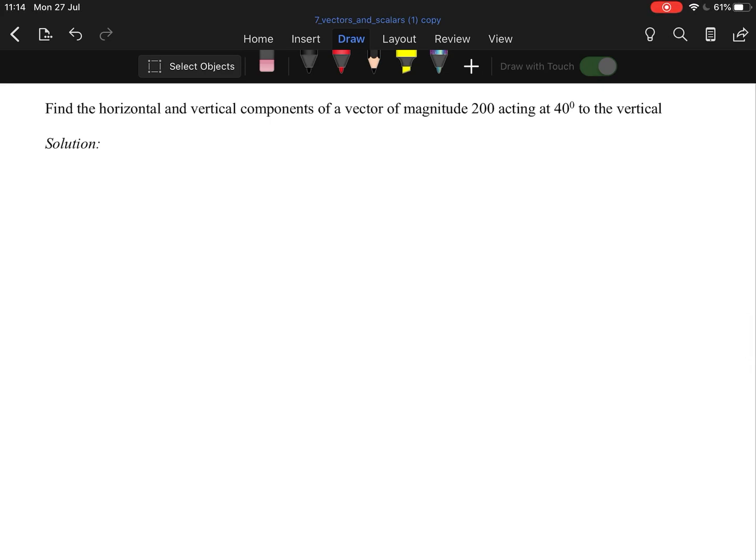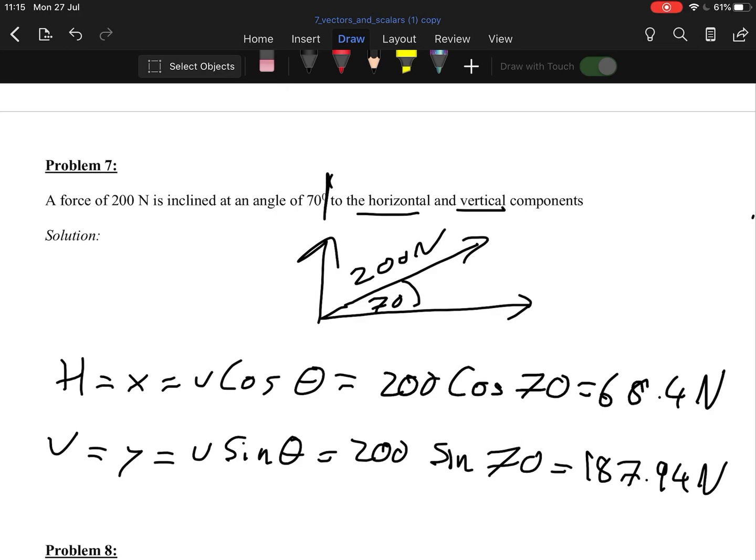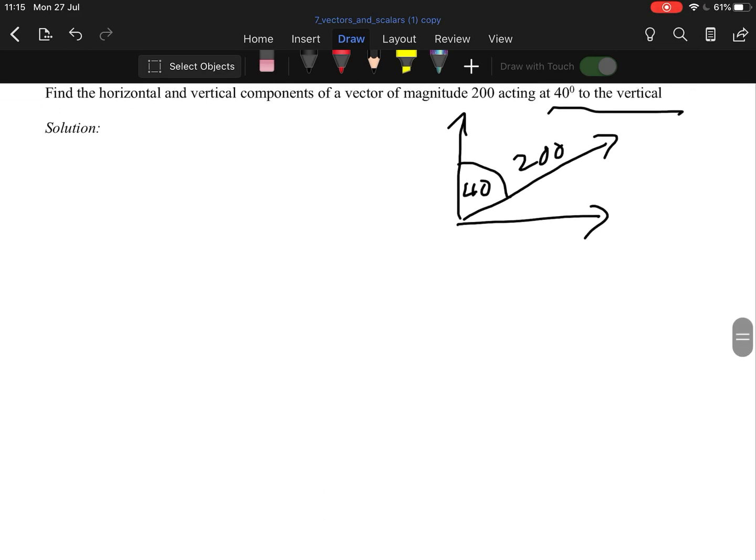So this one then is a little bit more tricky. Find the horizontal and vertical components of a vector of magnitude 200 newtons, 40 degrees from the vertical. Now, the reason this one catches people out is they don't read it. 40 degrees to the vertical. They do what they did above here, and they follow the same x equals v cos theta, y equals v sin theta, and away they go. And you're wrong. We're no longer off the horizontal. We're off the vertical.